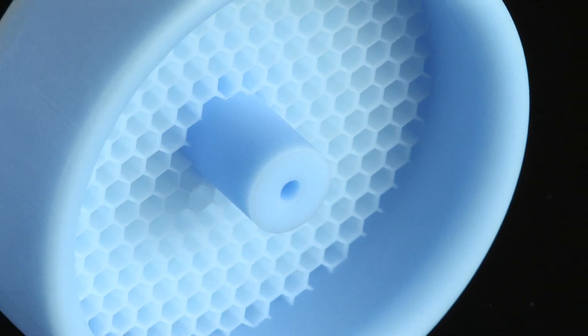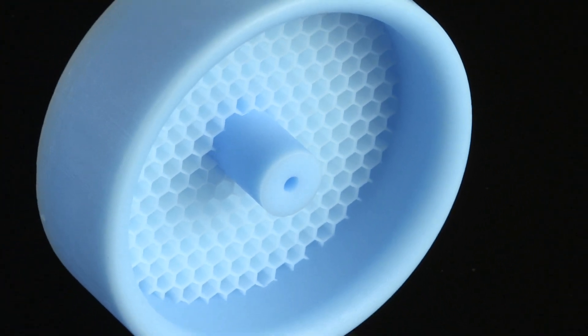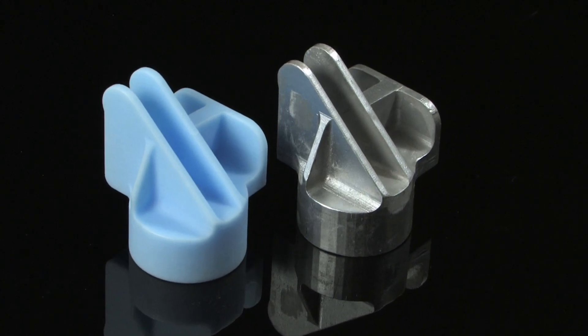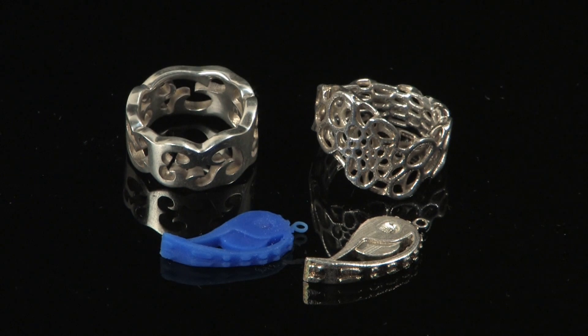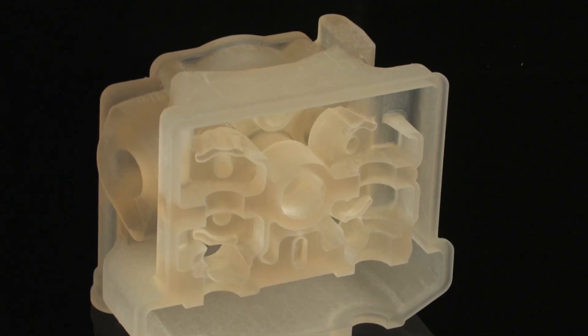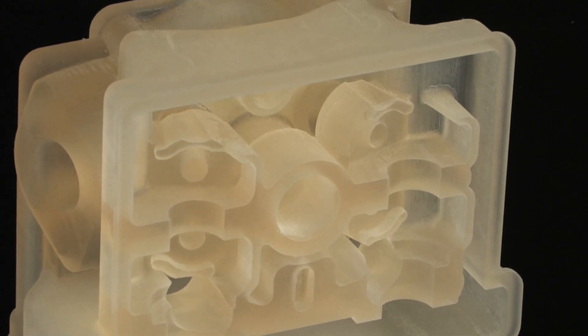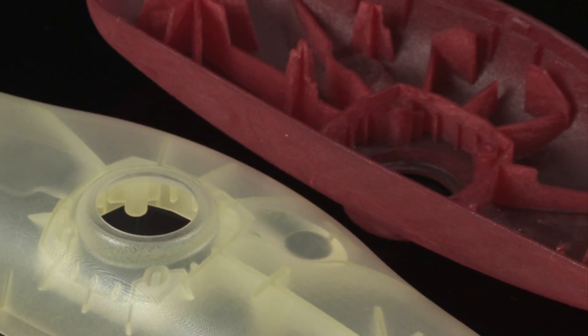Print highly detailed real wax patterns for direct investment casting to produce metal parts without additional labor and time required with traditional methods. Items ranging from jewelry to automotive and aerospace parts can be produced in small to medium volumes, saving weeks or months in the production cycle.